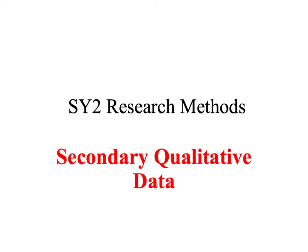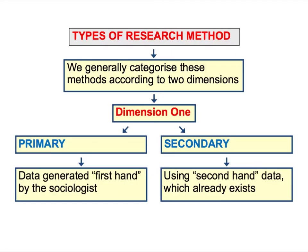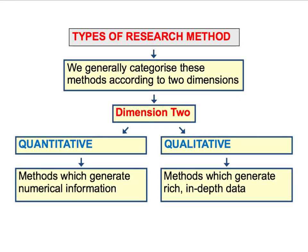Welcome to this research methods screencast where we're going to take a look at the use of secondary qualitative data in sociological research. This is the second screencast analysing the use of secondary data in sociology. In the first screencast we used the example of official statistics to discuss the usefulness of quantitative secondary data. In this screencast we're going to look at the use of qualitative secondary data.